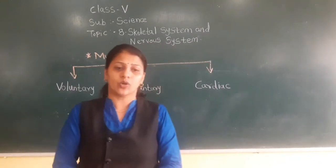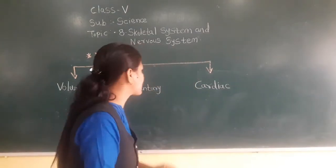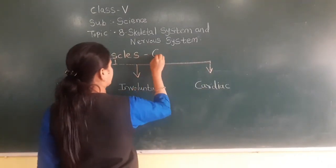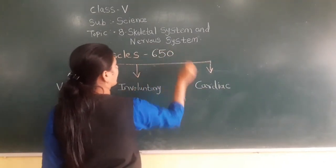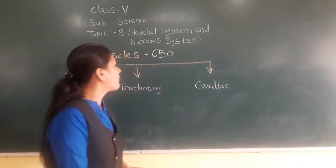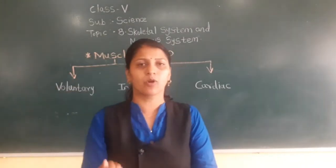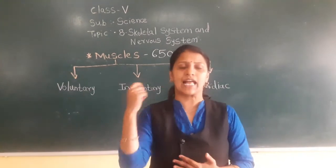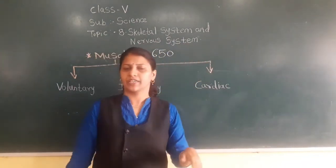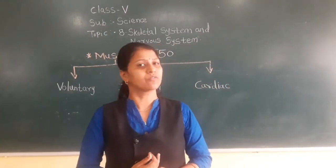There are a total of 650 muscles in our body. The muscles help the bones to move from one place to another. They help for the movement — muscles help the bones to move.